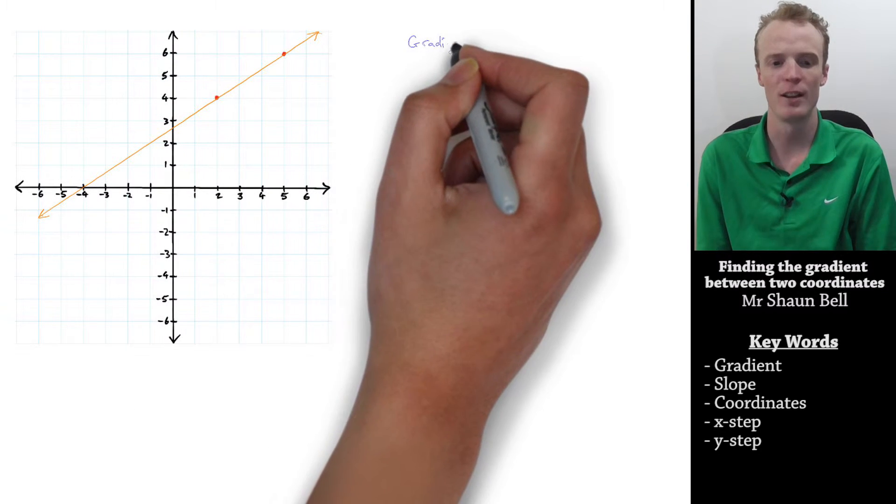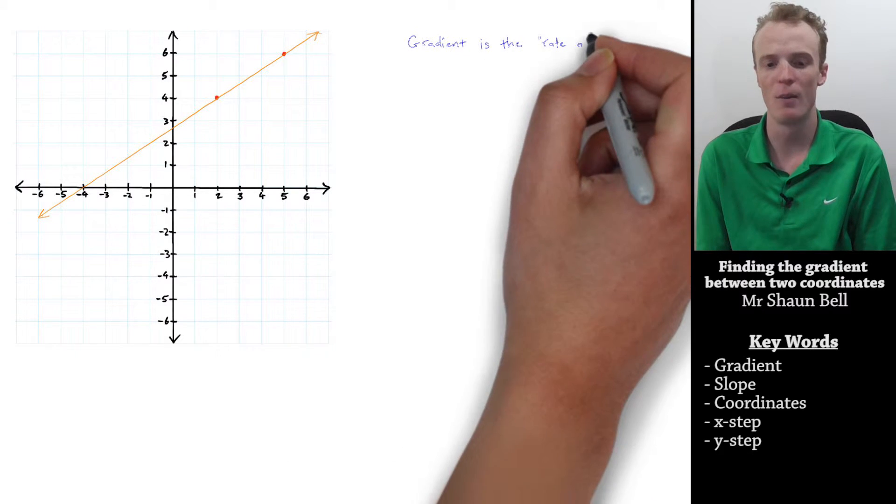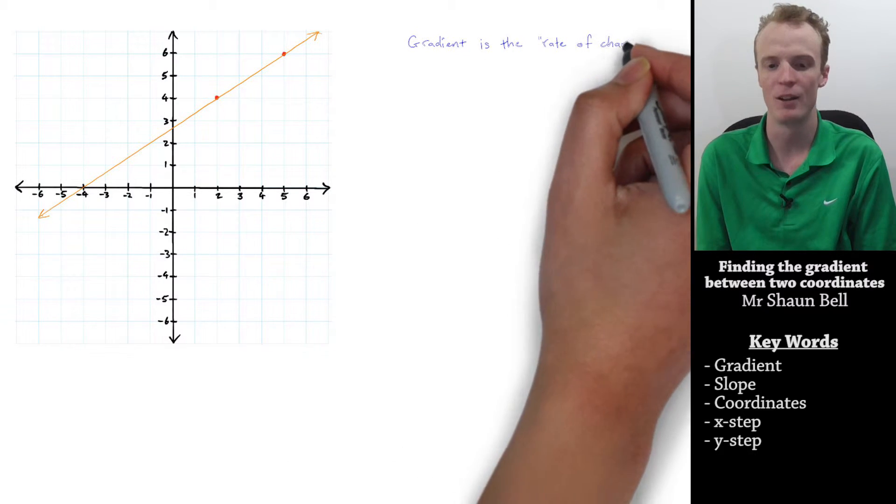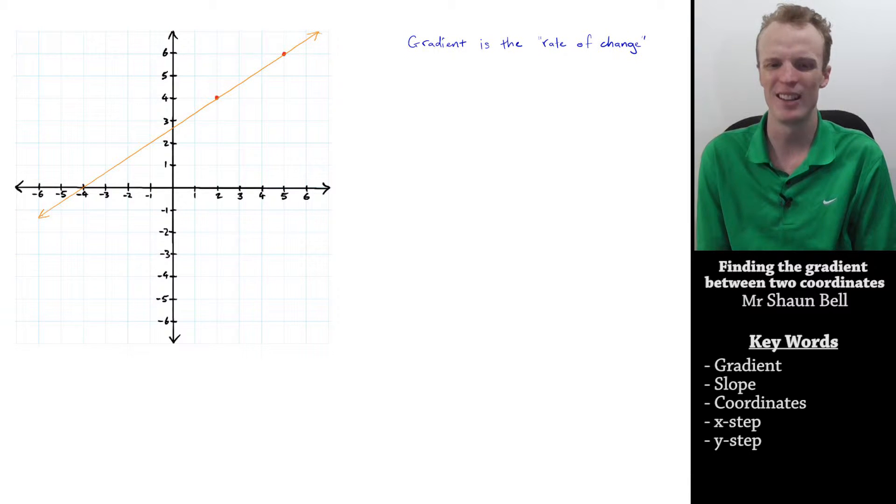When we are trying to find the gradient of a line, we are trying to find what is known as the rate of change. Essentially this is how much the y value changes for every one step of x. In maths we tend to use the letter m to represent the gradient, and I have referred to this value as the multiplication factor in previous videos. Essentially gradients are the same thing.